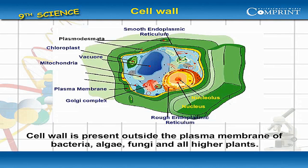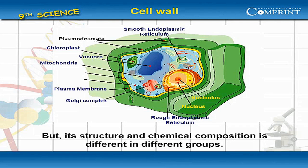Cell wall is present outside the plasma membrane of bacteria, algae, fungi, and all higher plants. But its structure and chemical composition is different in different groups.